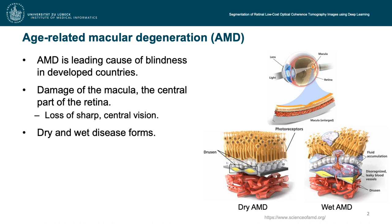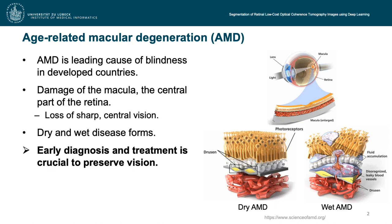Wet AMD promotes the growth of abnormal leaky retinal vessels, which tend to break, bleed, and leak fluid into the retina, causing localized detachment and thus rapidly leading to severe vision loss. The disease progression of wet AMD is therefore very rapid and patient-specific, which makes early diagnosis and treatment crucial for preserving vision.